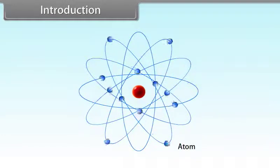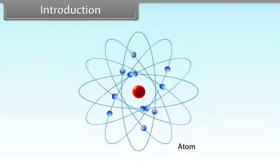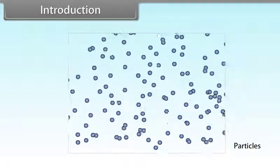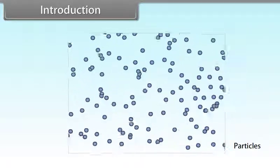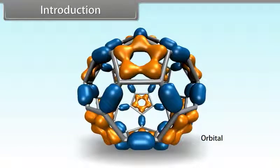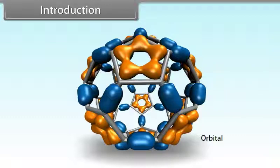Hey kids, today we will learn the quantum mechanical model of atom. Matter has dual behavior — wave as well as particle. Heisenberg's uncertainty principle is only applicable to small particles such as electrons. The region of the atom where the probability of finding an electron is maximum is called an orbital. Orbitals are characterized by a set of numbers known as quantum numbers. The energy, size, shape, and orientation of the electron orbital can be specified by the use of three quantum numbers: the principal quantum number, azimuthal quantum number, and magnetic quantum number.